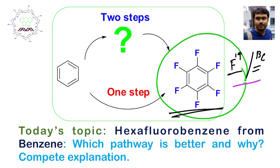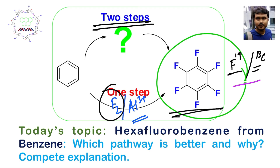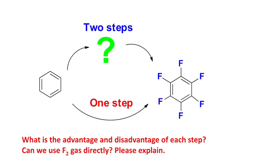Our today's discussion is how to prepare this molecule in one step or two steps. What do I mean by one step? One step means you may consider using fluorine and a Lewis acid like AlCl₃ — that is aromatic electrophilic substitution using fluorine as the halogen. So why do we not do this, and why do we follow the second pathway where an intermediate is produced?